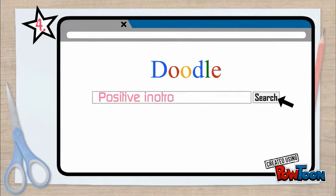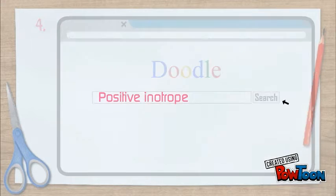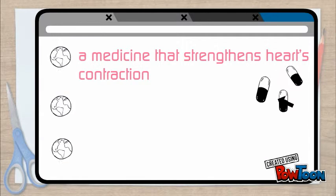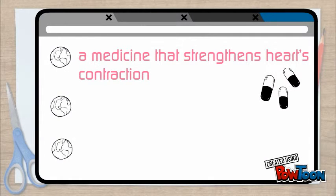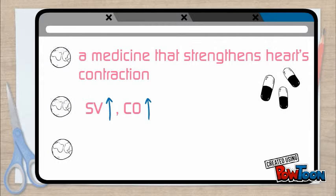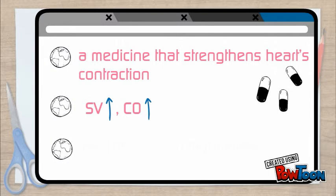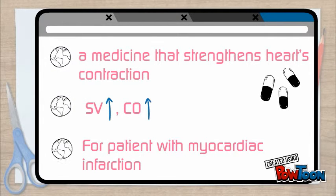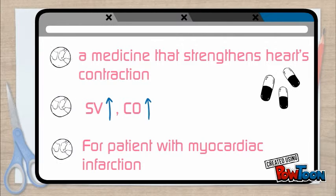Positive inotropes are medicines that strengthen heart contractions. When stroke volume increases, cardiac output increases. This is especially important for patients with myocardial infarction.